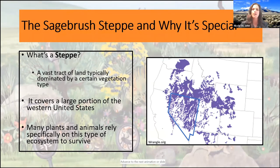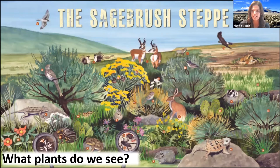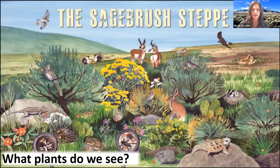We're going to bring up our next question here, and this one is going to be for you guys to participate via chat. My question for you is: what plants do you see here? Are there any plants that stick out to you that are familiar? Rabbit brush, sage, cactus — awesome.